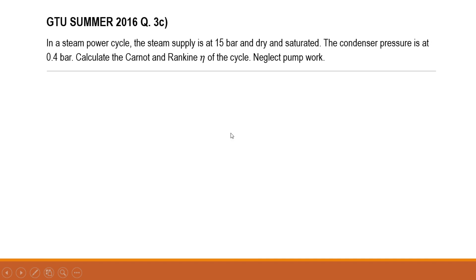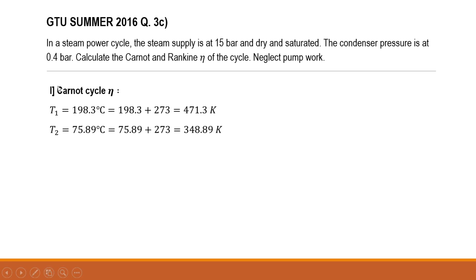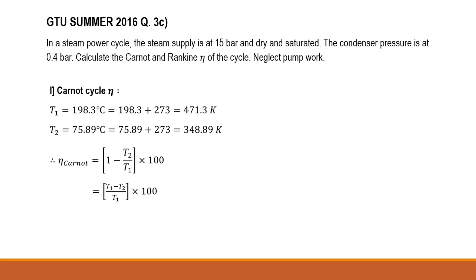First we find the Carnot cycle efficiency. The saturation temperature at p1 is 198.3°C, converted to Kelvin. The saturation temperature at condenser pressure is 75.89°C, also converted to Kelvin. Carnot cycle efficiency is given as 1 − T2/T1, or (T1 − T2)/T1 × 100. Substituting the values gives a Carnot cycle efficiency of 25.972%.